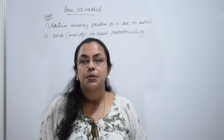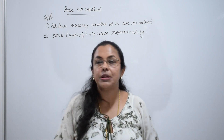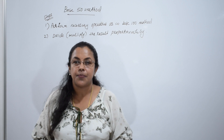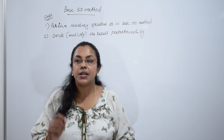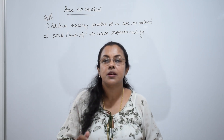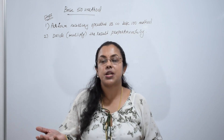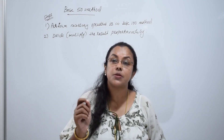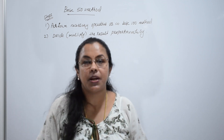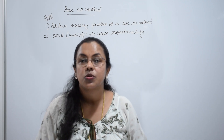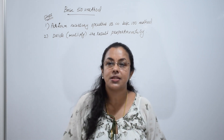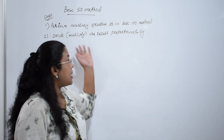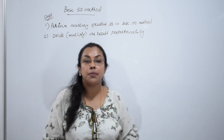If we want to multiply two numbers near to 50, what is the method? We can use the general method, but Vedic maths is for quick multiplication. So one more method is there, that is called the base 50 method.